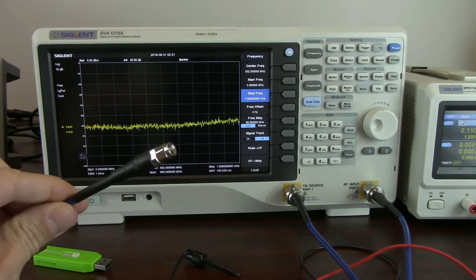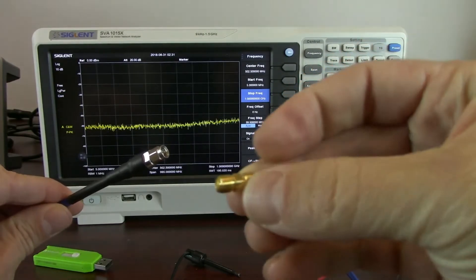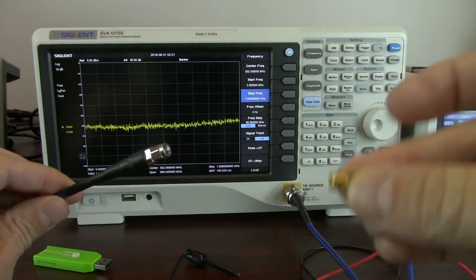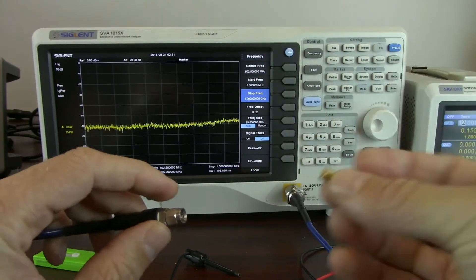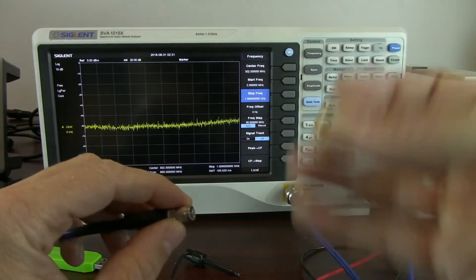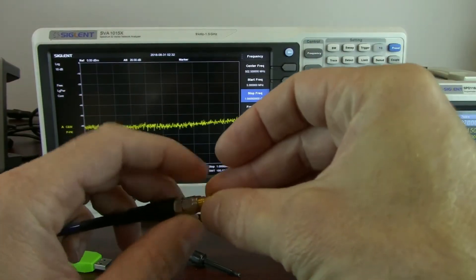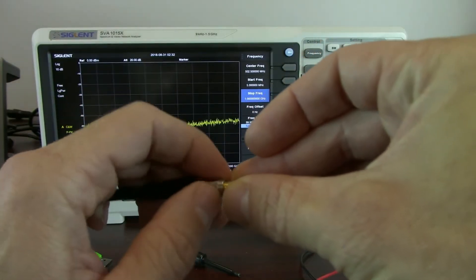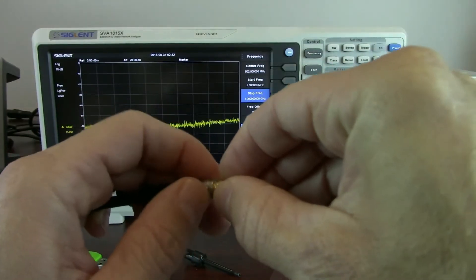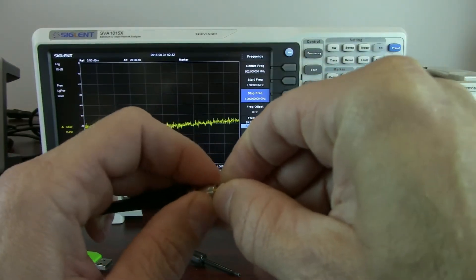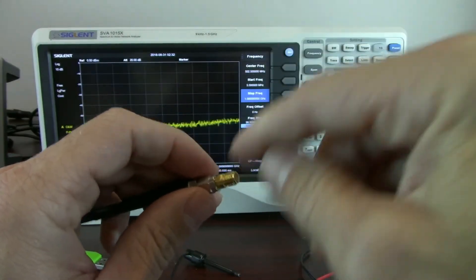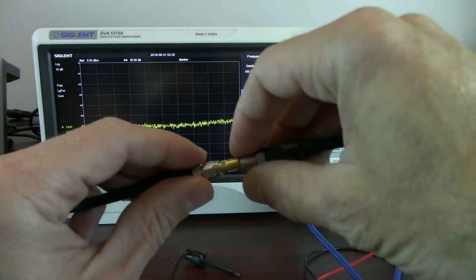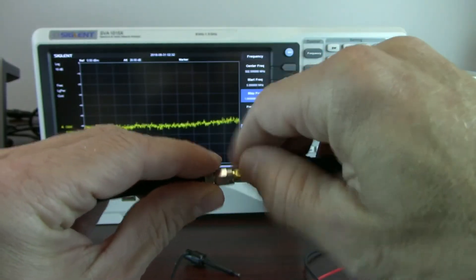We're going to have the two cables, and then we've got a small SMA to SMA through adapter, and we're going to use this in place of the device under test. So we're going to tighten the SMA lug, and note that I'm tightening the hex nut, I'm not spinning the barrel itself, and that actually helps the SMA connections last longer. So you never want to spin the connector, you want to spin the hex nut. And then I'm going to connect the RF input to the other side of the through adapter.